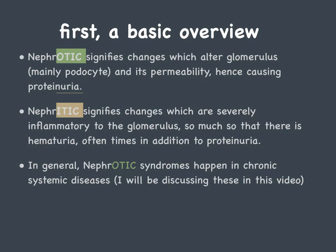In general, nephrotic syndromes happen in chronic systemic diseases — HIV, hepatitis B, hepatitis C, heroin injection, obesity, and diabetes. For diabetes specifically, there's a special type of nephrotic syndrome called diabetic glomerulosclerosis.